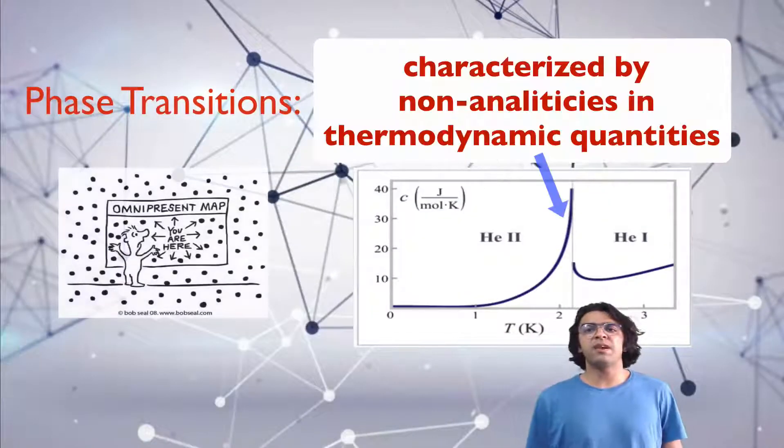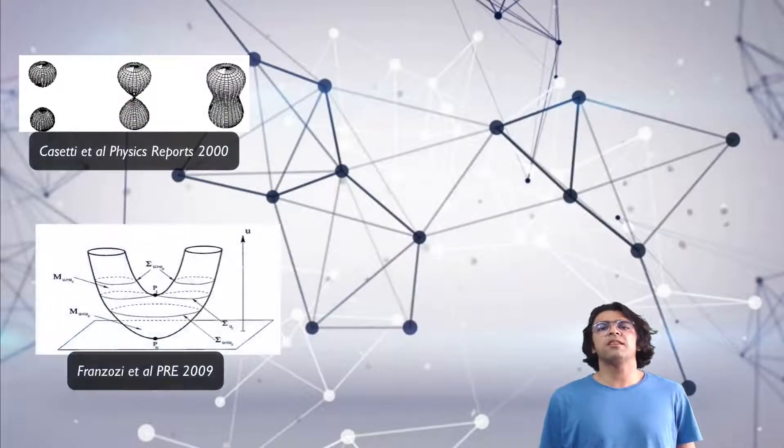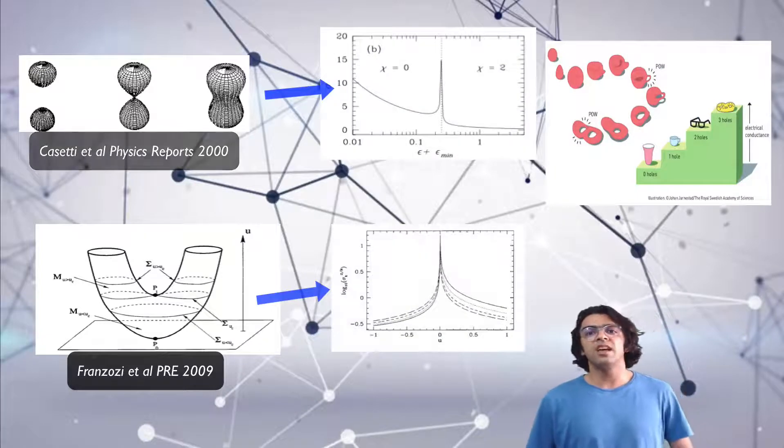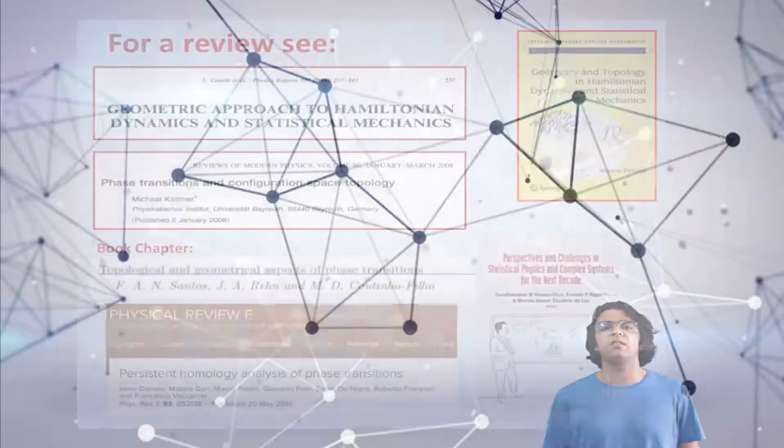Phase transitions are ubiquitous in nature. Over the past years, researchers provide arguments that phase transitions are related to topological changes in equipotential phase at the critical point.